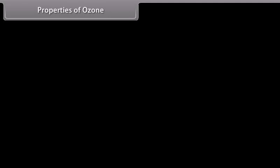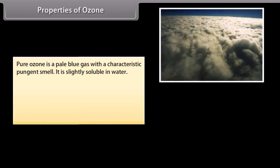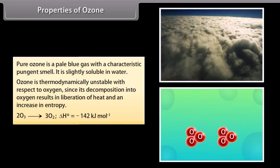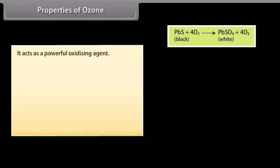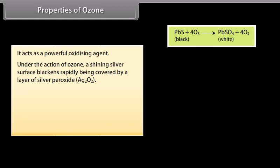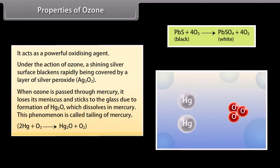Properties of ozone. Pure ozone is a pale blue gas with a characteristic pungent smell. It is slightly soluble in water. Ozone is thermodynamically unstable with respect to oxygen. Since its decomposition into oxygen results in liberation of heat and an increase in entropy. Due to ease with which ozone can liberate an atom of oxygen, it acts as a powerful oxidizing agent. Under the action of ozone, a shining silver surface blackens rapidly being covered by a layer of silver peroxide and Hg2O2. When ozone is passed through mercury, it loses its meniscus and sticks to the glass due to formation of Hg2O which dissolves in mercury. This phenomenon is called tailing of mercury.